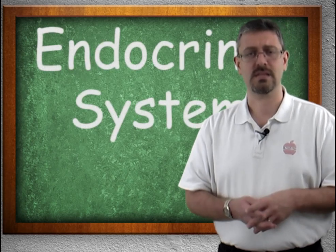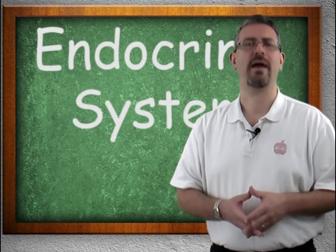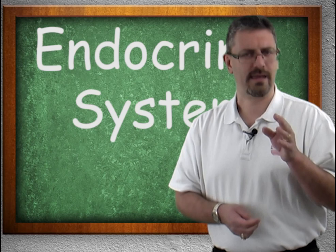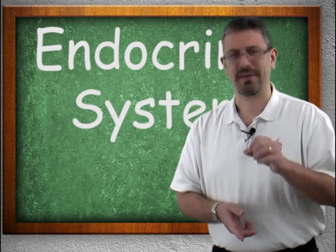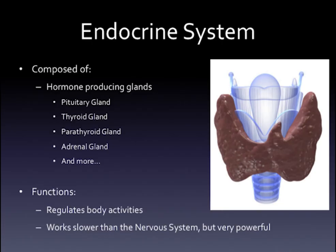The endocrine system also regulates body activities, just not as quickly as the nervous system, but it is very powerful. The endocrine system is composed of hormone-producing glands such as the pituitary gland, the thyroid gland, the parathyroid gland, and the adrenal gland.